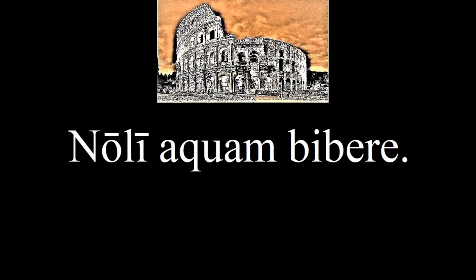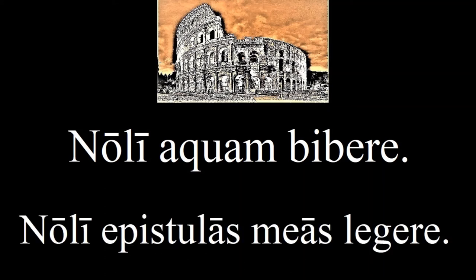The next new word we'll need for the story is also really convenient — it's the way to say 'don't.' 'Noli aquam bibere' — don't drink the water. Notice that the verb is in the infinitive form when we use the word 'noli,' but that makes sense because there isn't really a subject in this sentence. For the next sentence, recall that in order to say 'my,' we use 'me' plus the appropriate ending for that noun. Try to say: 'Don't read my letters.' 'Noli epistolas meas legere.'